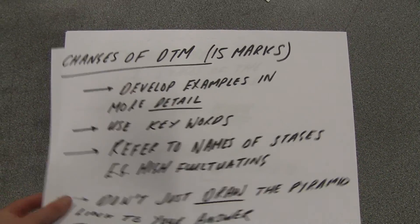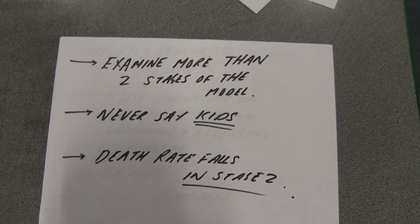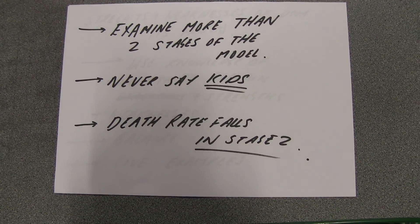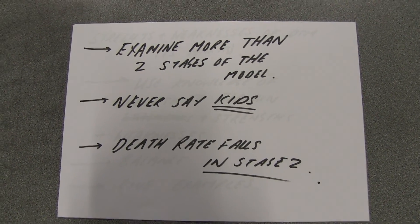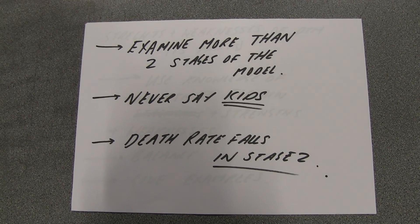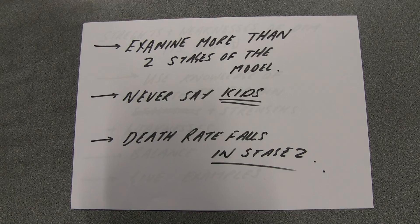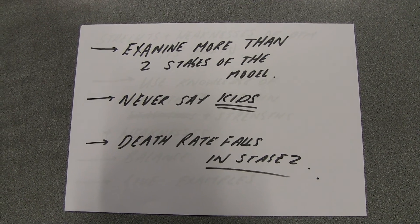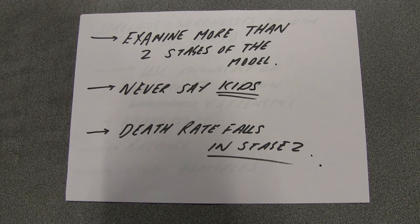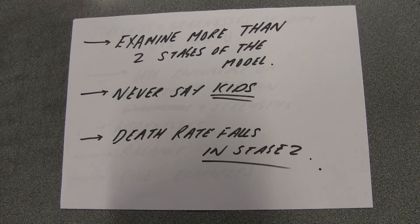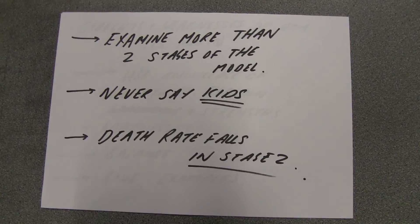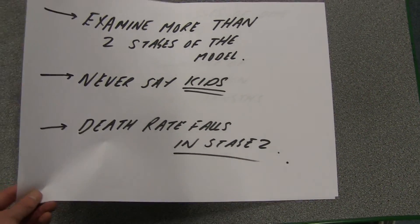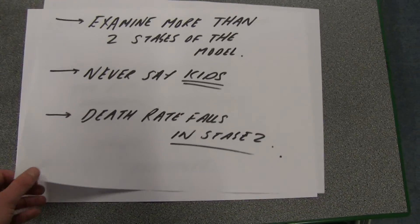My key thing is that you need to use examples. Also make sure that you examine two or more stages of the model — some of you didn't do that, though most of you did try to do all of them. Never ever in an exam say the word 'kids' — we're talking about children. Kids are baby goats; we're not talking about the number of baby goats that are born and die. A lot of you also said that birth rate starts to fall in stage two because of contraception — it doesn't. It's death rate that falls first, because death rate starts to reduce as a consequence of improvements in sanitation and healthcare.